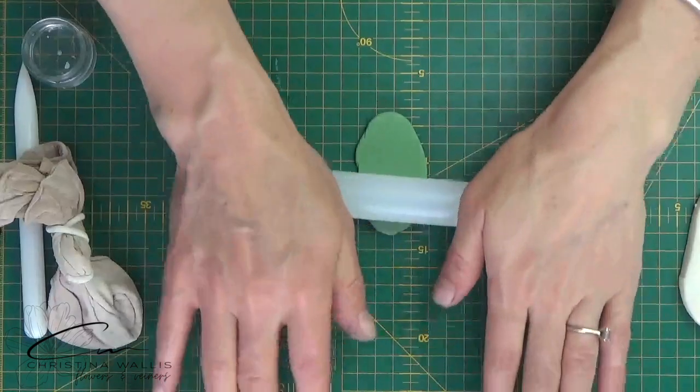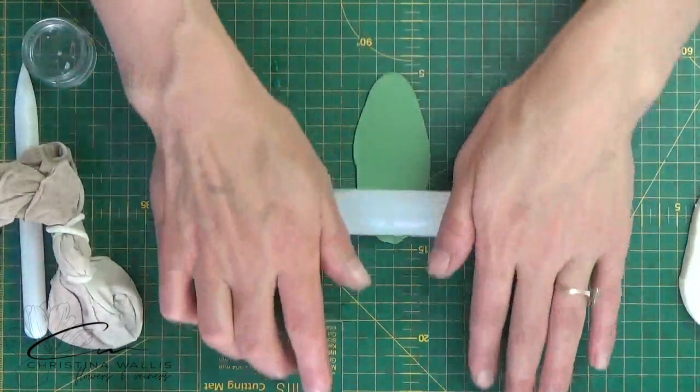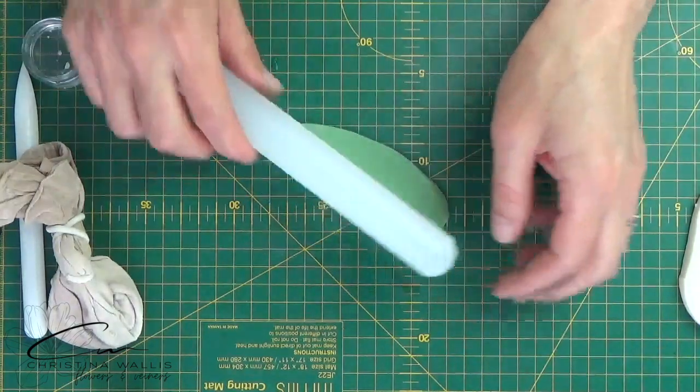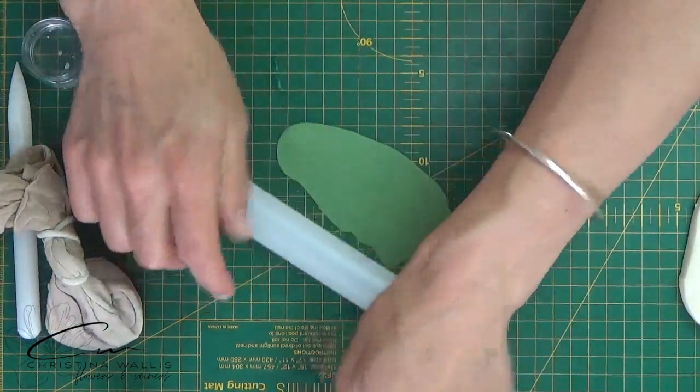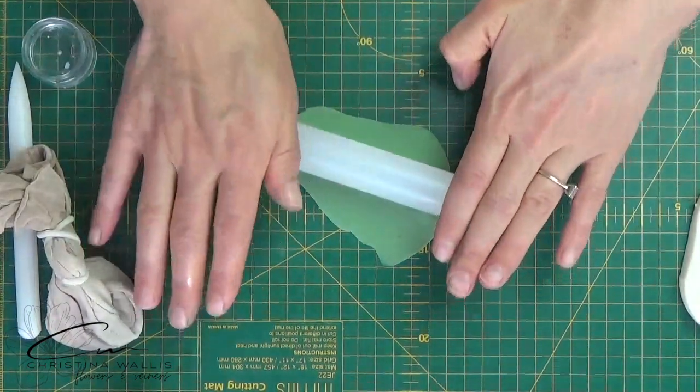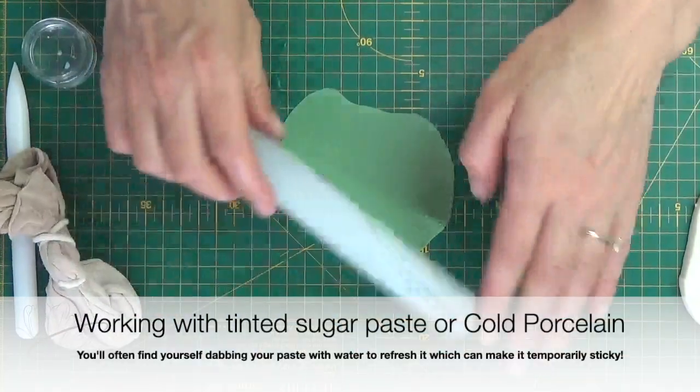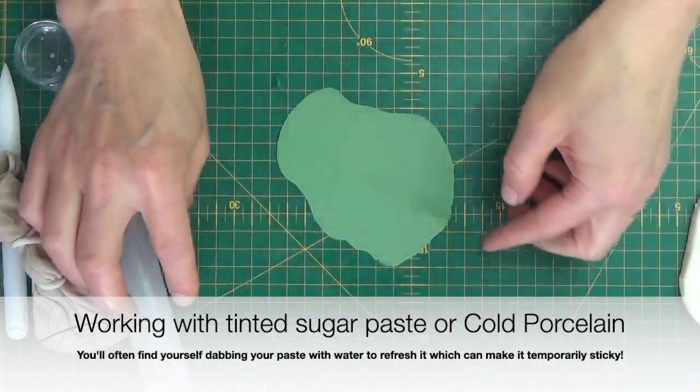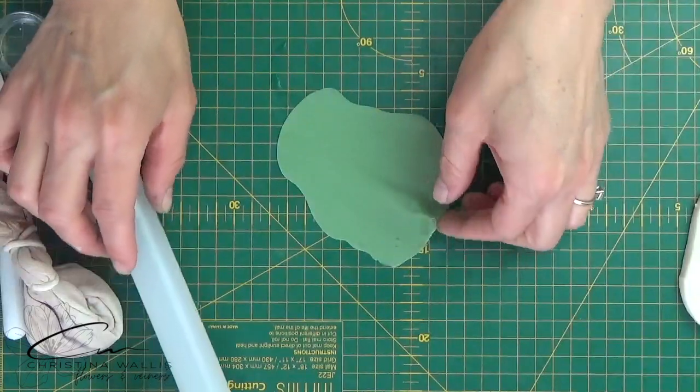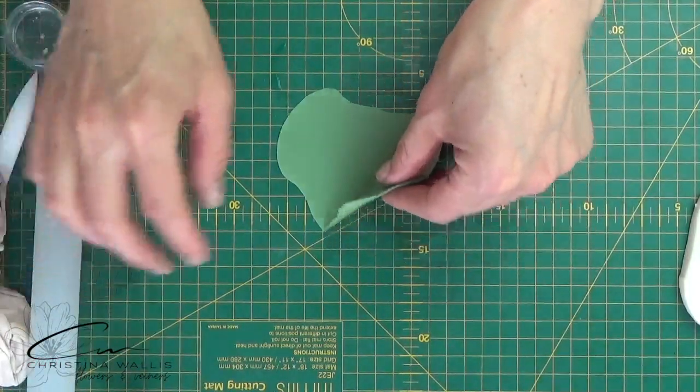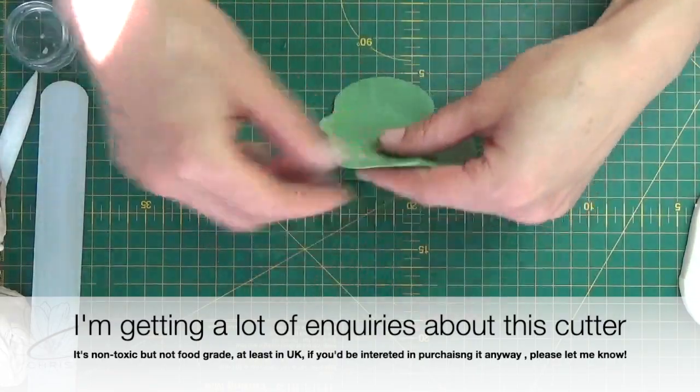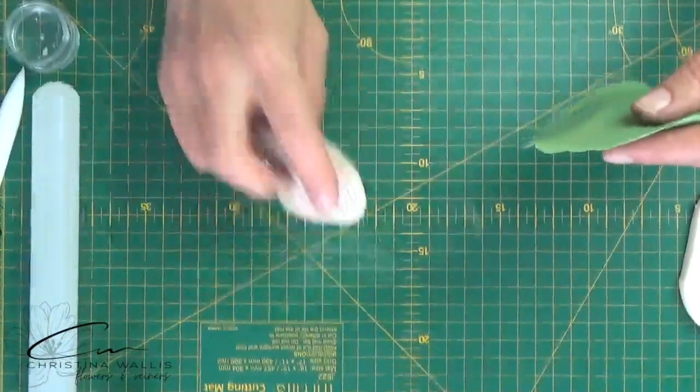So the first thing I'm going to do, I'm going to roll out my clay. I'm using cold porcelain clay here on a green board. I do dust the board. I use self-made dust because it has very fine mesh, as opposed to the ones you buy which are presumably for cakes, and it gives away more dust than I need on my tinted clay.